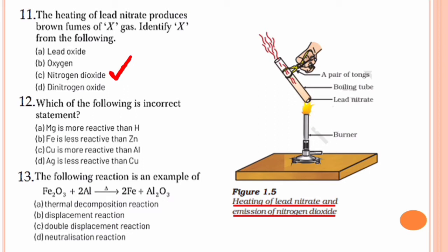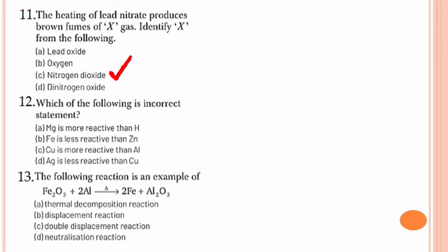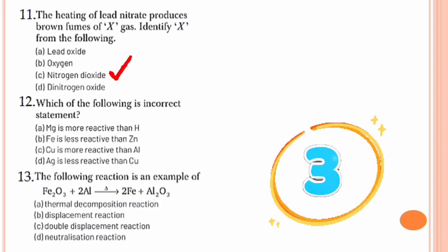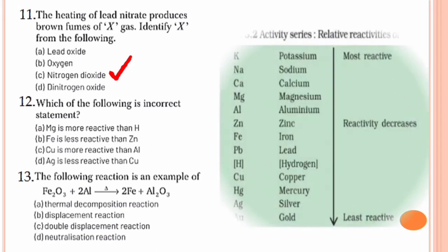Question number 12. Which of the following is an incorrect statement? Magnesium is more reactive than hydrogen; iron is less reactive than zinc; copper is more reactive than aluminium; silver is less reactive than copper. Recall the reactivity series that we have learnt in chapter 3.